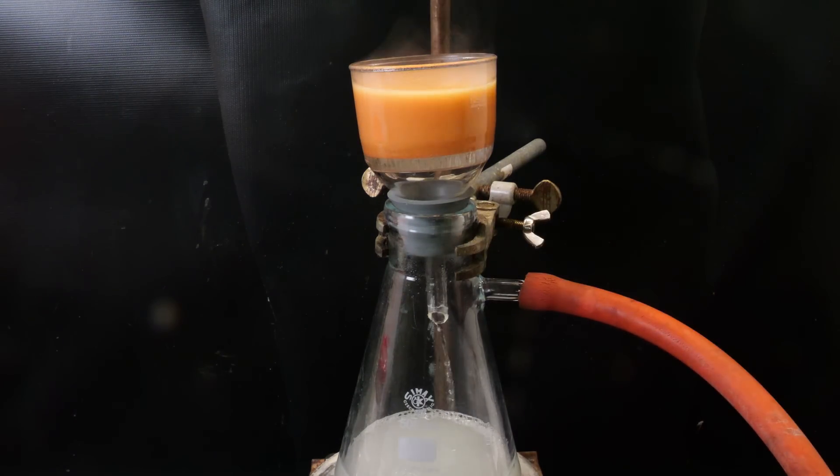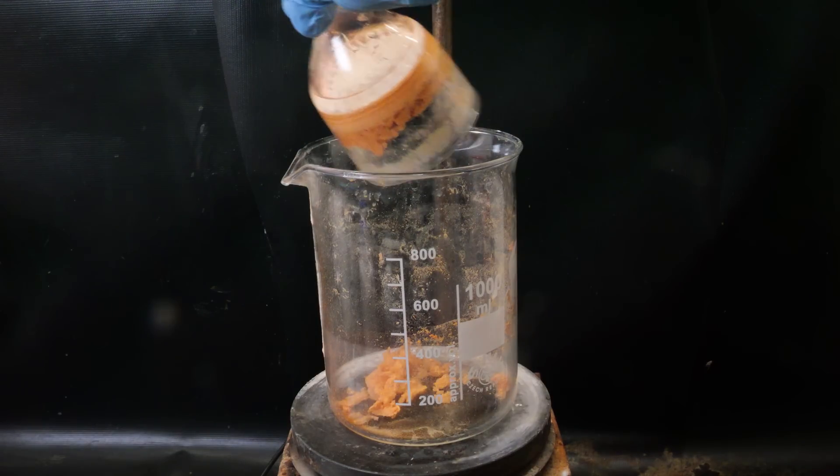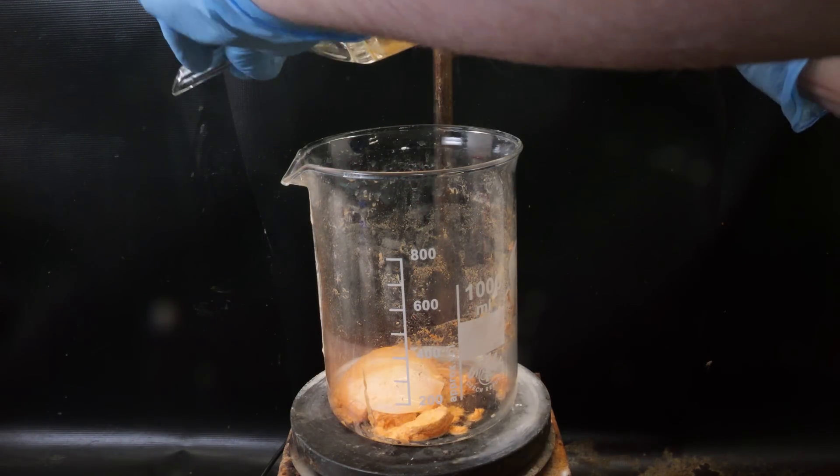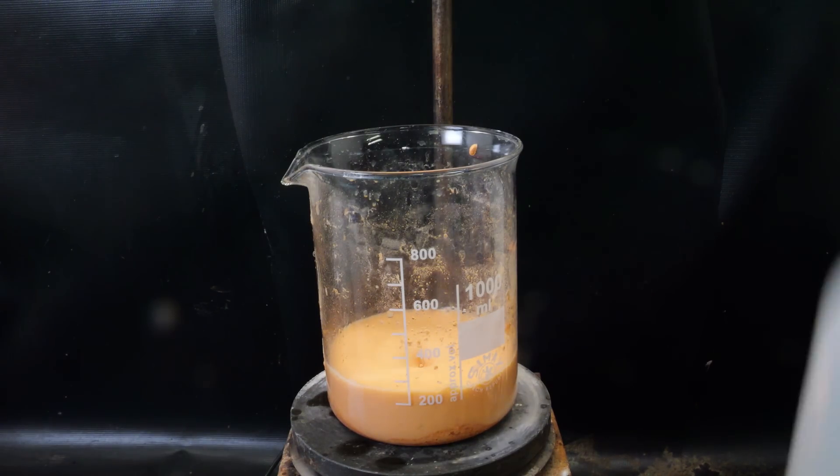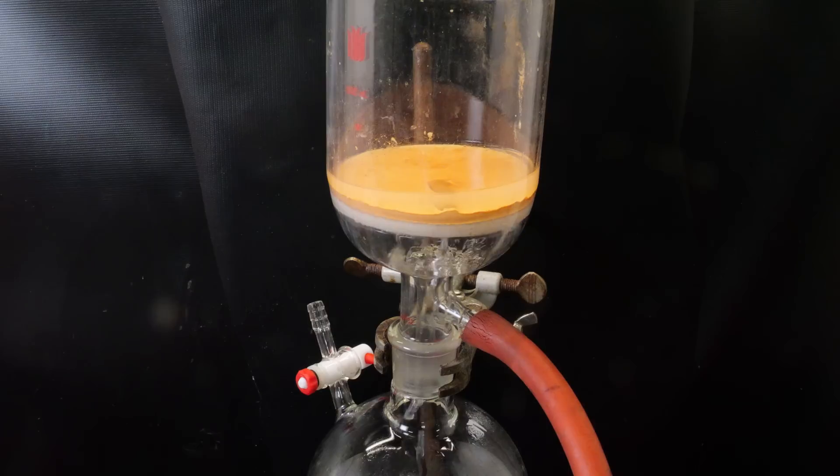I set this up for vacuum filtration to collect all the product. Now it is still contaminated with salts, so I will stir it with some water for a while to clean it up. I then filter it again, wash it with more water, and then with a large amount of acetone.